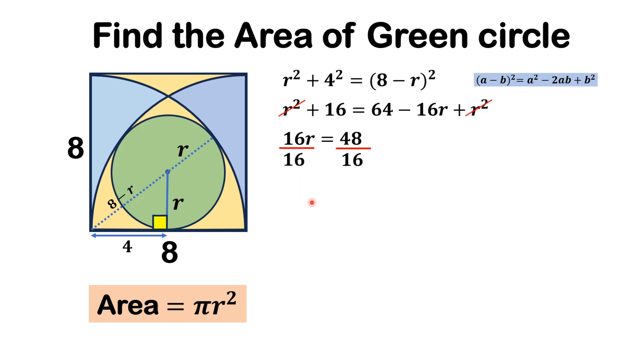Dividing both sides by 16, the 16 will be cancelled out, and r = 3.